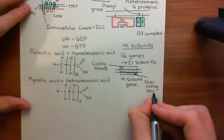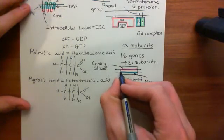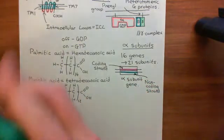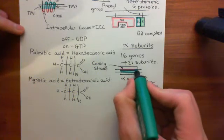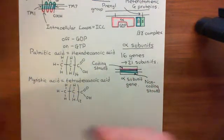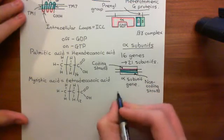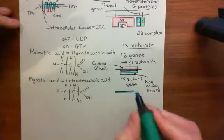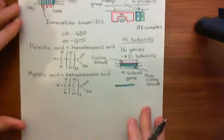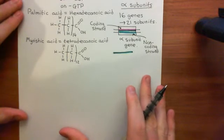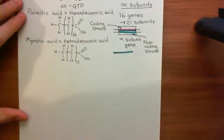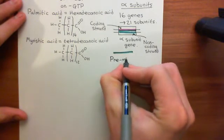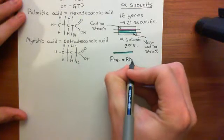RNA polymerase 2 will work its way along the coding strand to produce a piece of mRNA — let's highlight that in turquoise. This turquoise line is a piece of mRNA complementary to the coding strand in purple. However, this is not the mRNA that will go through the ribosome and be translated into protein. This is the primary transcript, also called the pre-mRNA, and you must not send this straight to a ribosome.